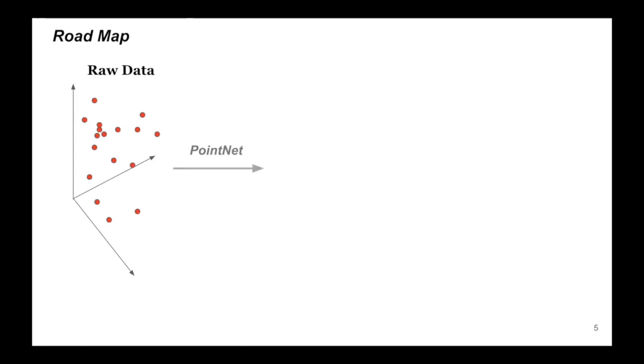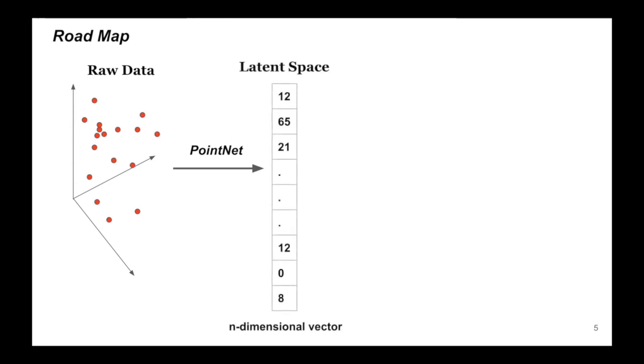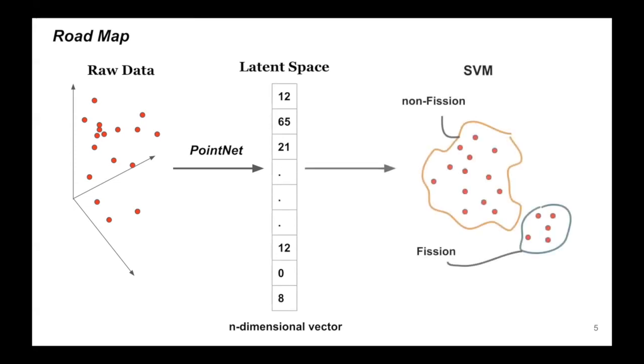My mentor Michelle Kuchera suggested the following line of thought: we have raw unlabeled data that we put into a PointNet model. We are not interested in the output of this model — we just get the latent space from there, which we put further into a one-class SVM. This gives us results: two classes, fission and non-fission.